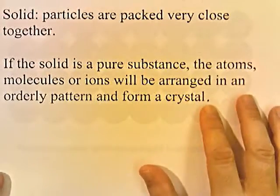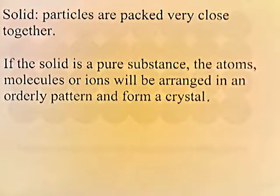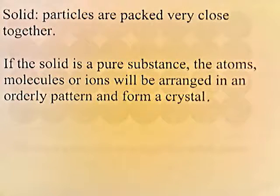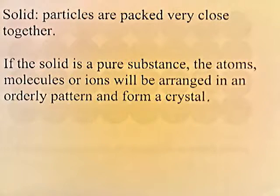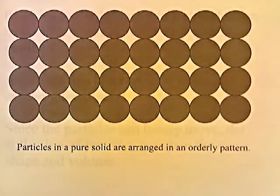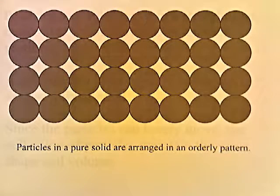Now in a solid, particles are packed very close together. If a solid is a pure substance, the atoms, molecules, or ions will be arranged in an orderly pattern and form a crystal. A pure substance would be like an element or compound such as salt or sugar. If you have mixtures of different molecules and atoms it won't form a crystal, but with a pure substance like pure salt or pure sugar, the molecules, ions, or atoms form a nice orderly pattern.